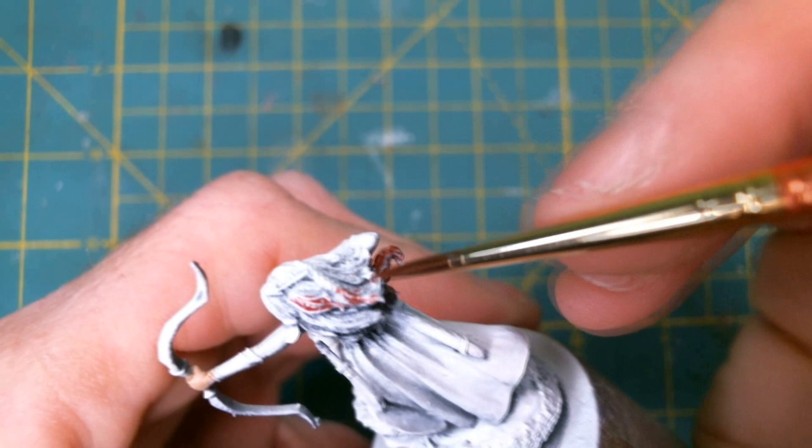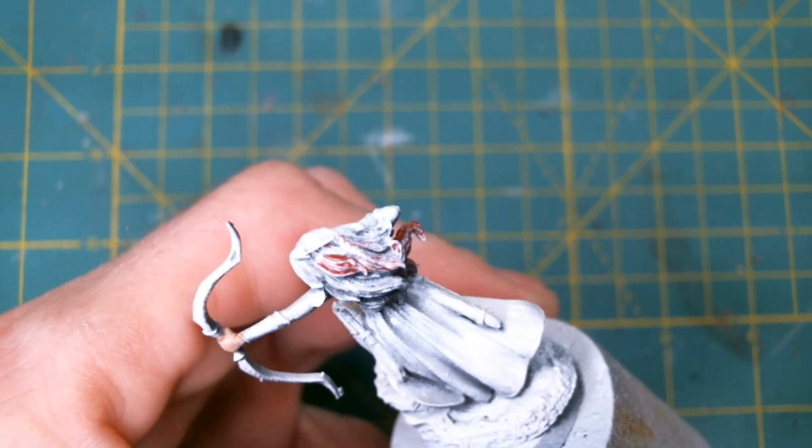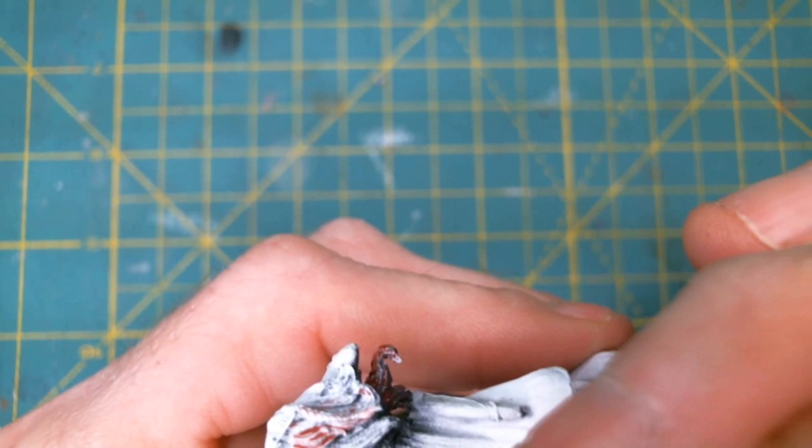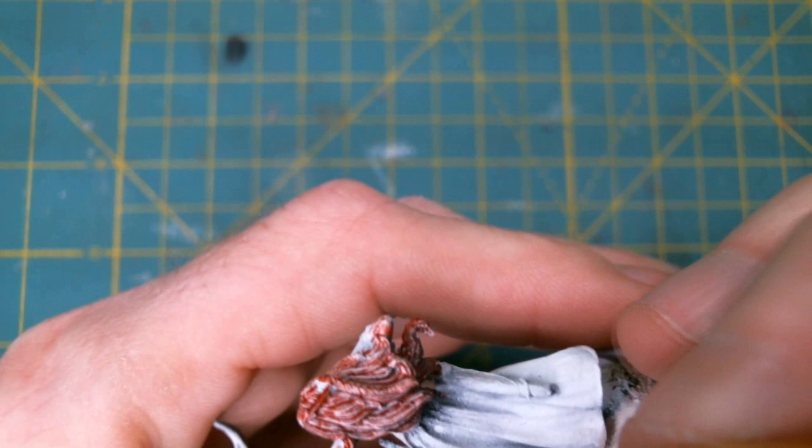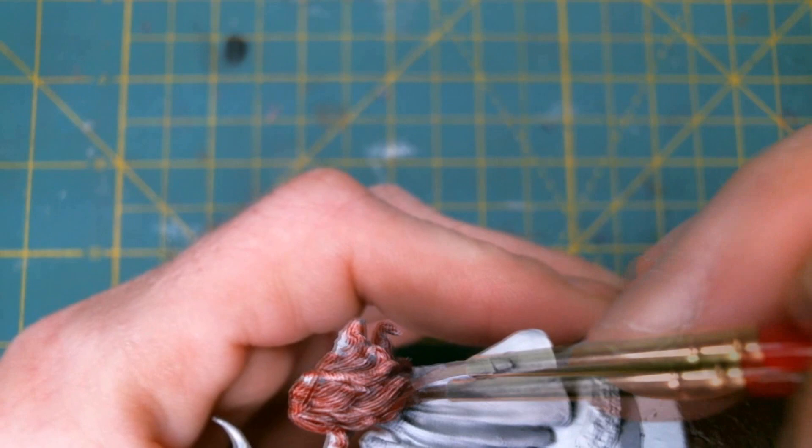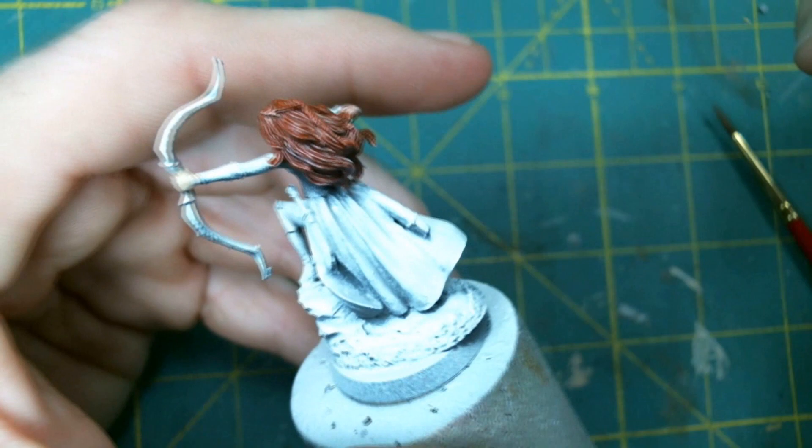And this I used the Reaper Triad colors for red hair starting with Auburn Shadow. Now to get a good base coat I did have to go over it a couple of times with a few thin layers of paint.